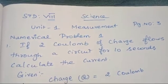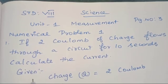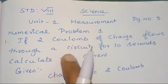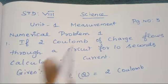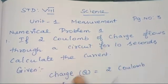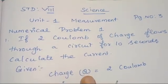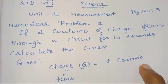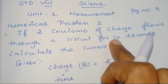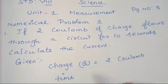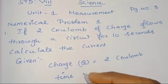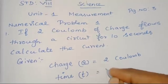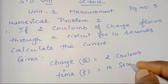First we have to write the given terms — that is, what values are given in the question. In this question, the values given are: charge, so charge symbol Q is equal to 2 coulomb. And next, 10 seconds — seconds always represents the quantity time. So, time T is equal to 10 seconds.